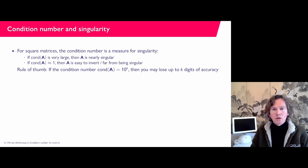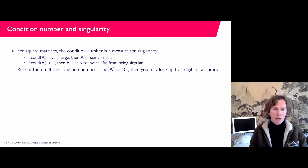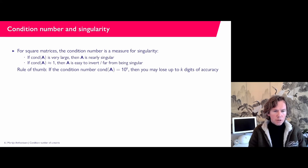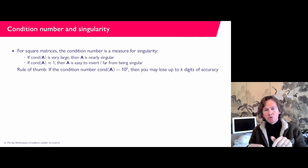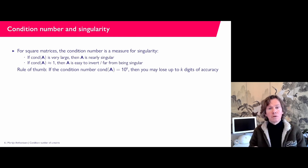For square matrices, the condition number is also a measure for singularity. If you have a very large condition number — 10 to the power 12 or whatever — then your matrix is nearly singular. If it is close to 1, which is the lowest it can be, it means that A is easy to invert, far from being singular. The rule of thumb is: if your condition number is 10 to the power k, then when solving the linear system you lose k digits of accuracy. So if your matrix is accurate to 10 to the minus 10 but your condition number is 10 to the power 6, your solution is only accurate to 10 to the minus 4 — only 4 digits are trustworthy.